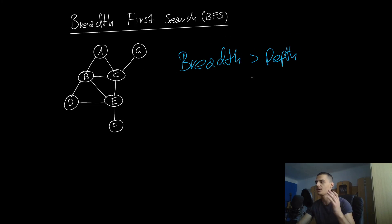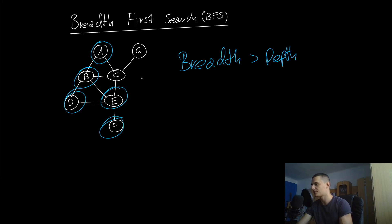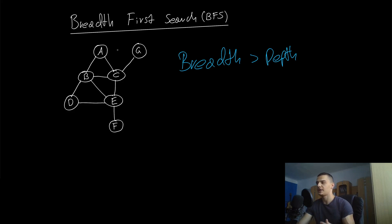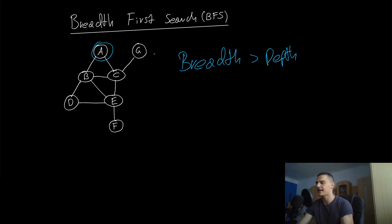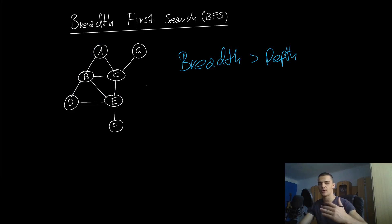The order in which we discover nodes is different from other approaches. Let's say A is our starting point. Instead of just randomly visiting edges and outer nodes, we want a structured approach. With BFS we look at all the neighbors first, then the neighbors of those neighbors, before going any deeper. So from A we could go to B, and rather than immediately going deeper we'd also go to D, E, or whatever neighbors exist.